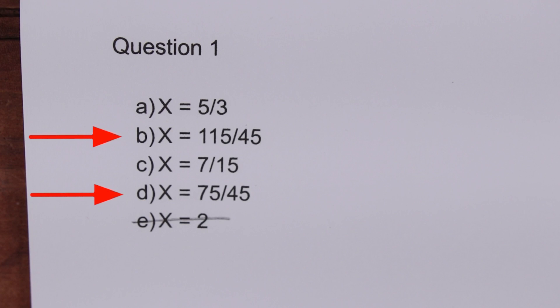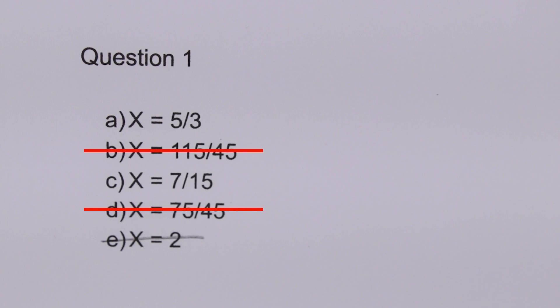Now if we look at D and B, both of them can be further reduced. I don't know many test makers that would reward bad math etiquette like that. So we can rule them out too. Now there's just A and C left. Both these options make good answers, but I'd put my money on A — 5 over 3.